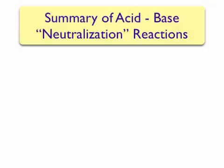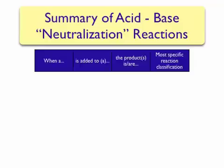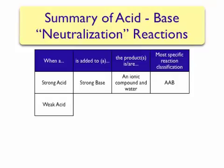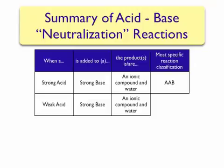We have now seen three different types of acid-base neutralization reactions, summarized in this slide. If we react a strong acid with a strong base, we end up with an ionic compound (salt) and water — this is specifically classified as an Arrhenius acid-base reaction, representing the most specific but smallest subset of reactions. If a weak acid and a strong base are mixed, you also form an ionic compound and water; however, the most specific classification based on the net ionic equation is Bronsted-Lowry acid-base theory — it is a proton transfer reaction.